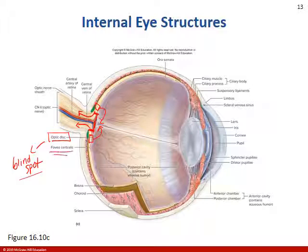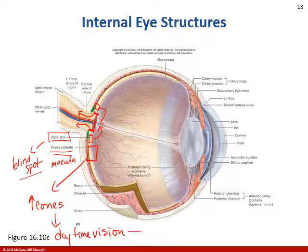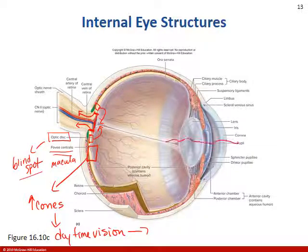The other area we should look at is the fovea centralis, which is in an area called the macula. Right here we have a high number of cones, and this is used for daytime vision. If light is refracted here on the fovea centralis, this gives us very detailed, precise vision.